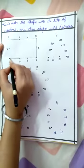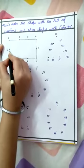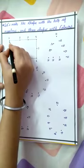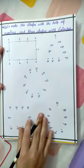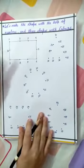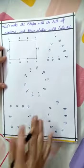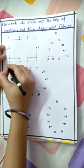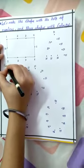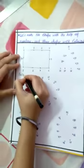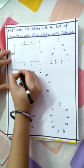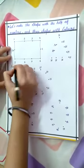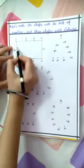Eight, nine, ten, and join again back to one. So this is our rectangle shape. Which shape is this, children? This is a rectangle shape. We have to write down 'rectangle.' A rectangle has four sides — two sides are equal and two sides are equal. This side and this side are equal, and this side and this side are equal.